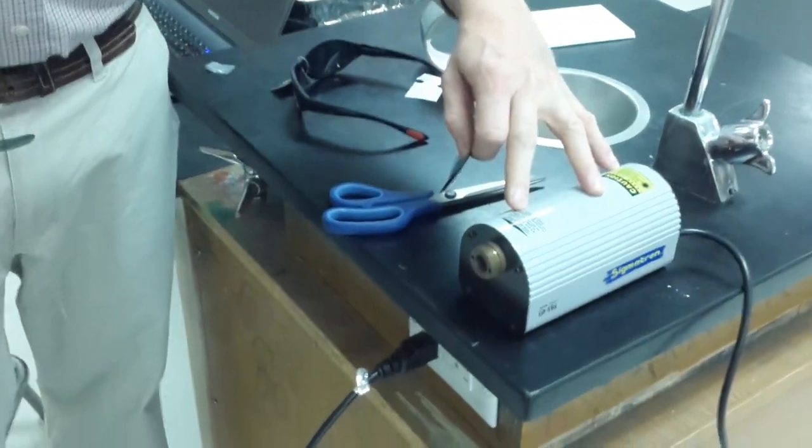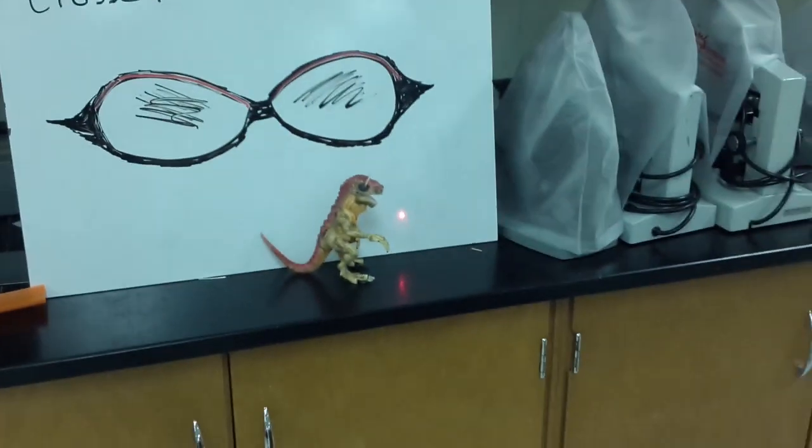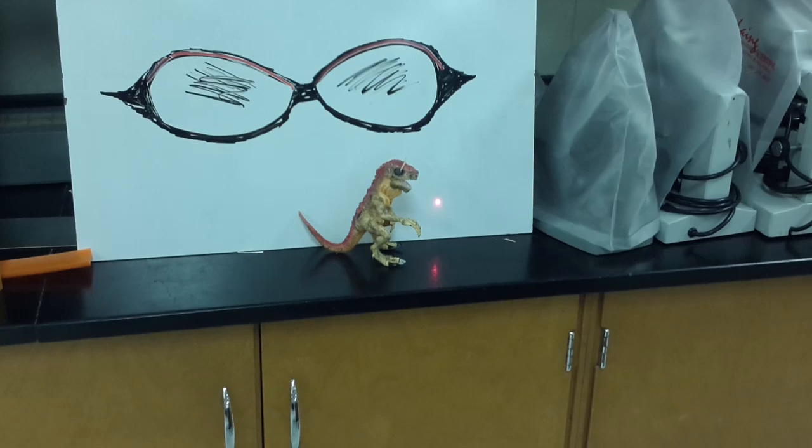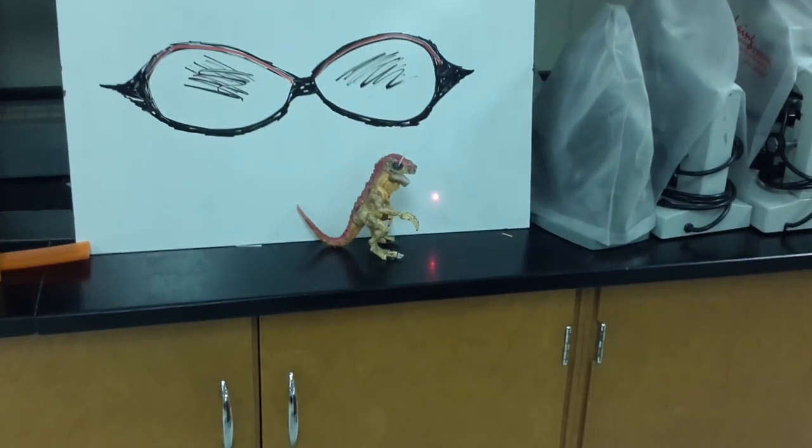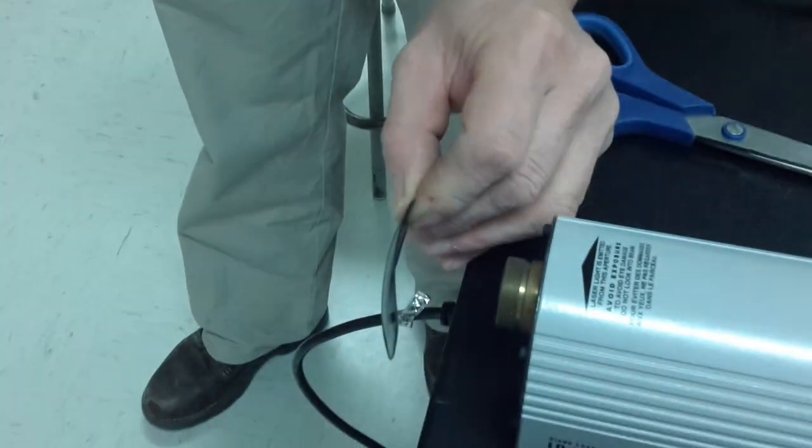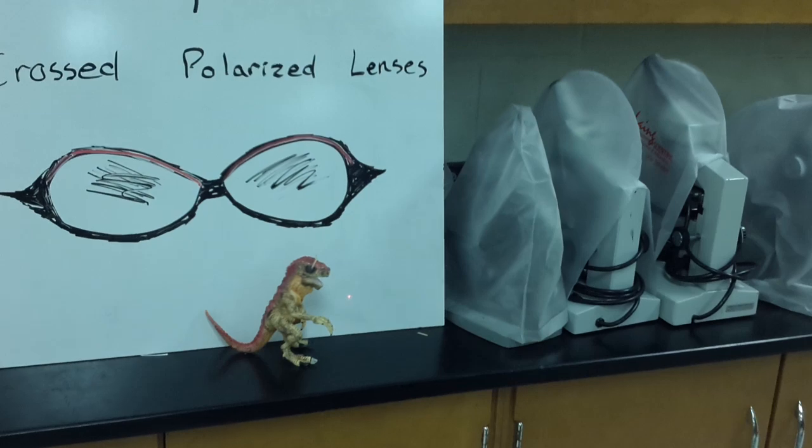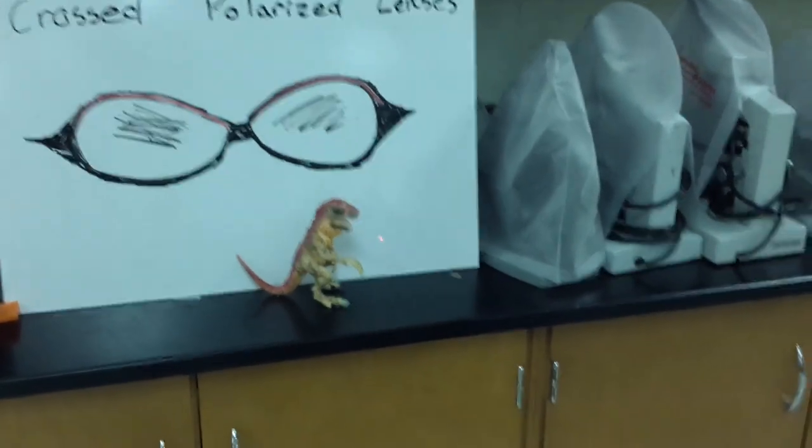And here we have a laser. Nothing in particular special about the way the light is polarized coming out of the laser. But what we're going to do is put one lens in the laser beam like that. And as you can see, the light's darker when we put the lens in, but it's still there. You can still see it.